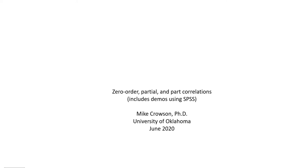Hi everyone. When you're running multiple regression analysis in SPSS, one of the pieces of information you may obtain in your output are zero-order, partial, and part correlations. What I wanted to do in this presentation is demonstrate how to obtain those and provide context to help you better understand what these are actually referring to. Before we get started, note that underneath the video description you will find a link to a PowerPoint that provides a lot more detail and conceptual information than I'm covering in this video, so be sure to download that PowerPoint to get a deeper dive on these topics.